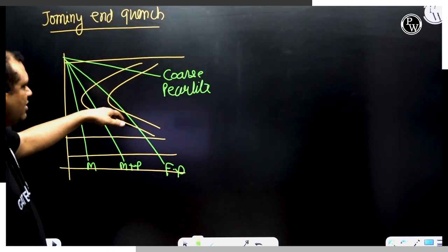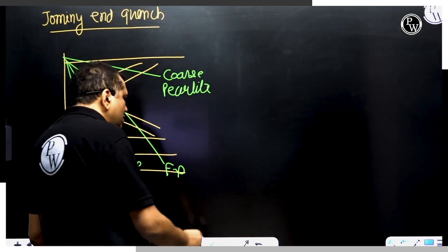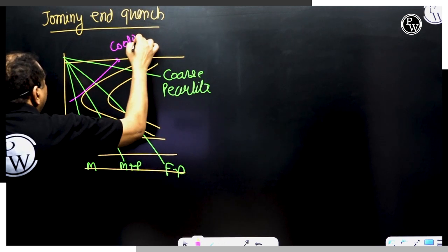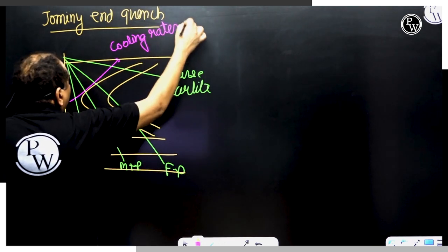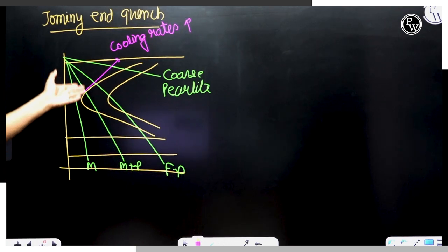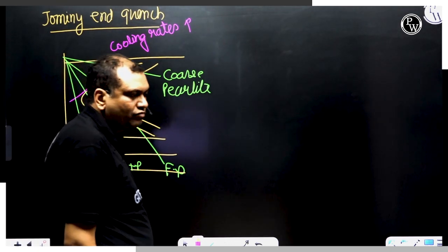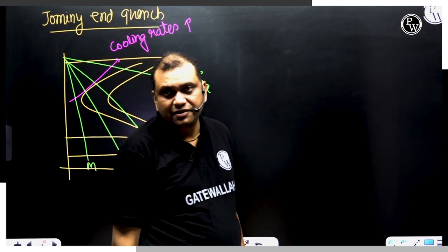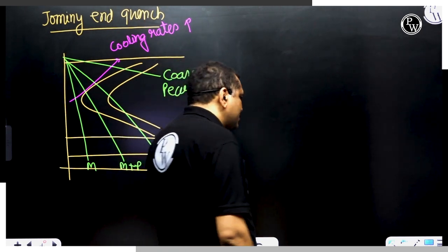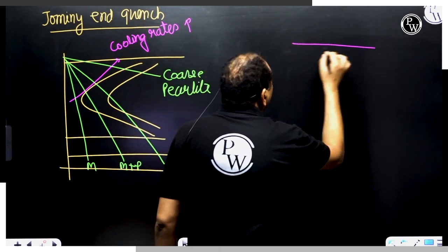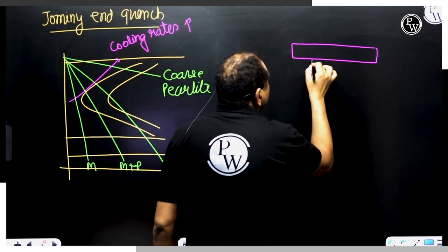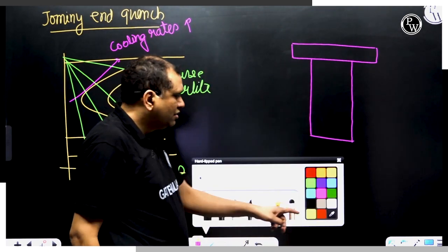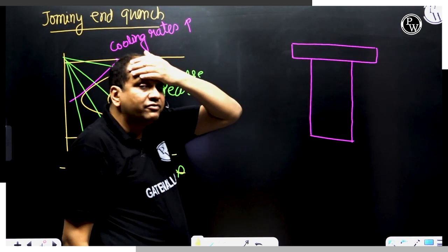So that's how the microstructure is going to change. As discussed previously, cooling rates are increasing in this direction. Germany conducted one test — the Jominy end-quench test. Let us look at the sample carefully.